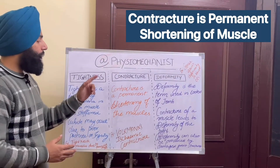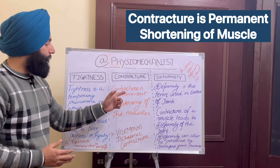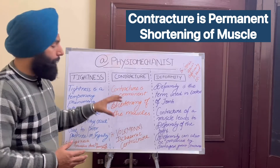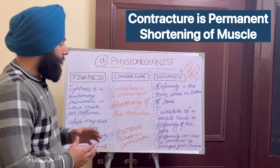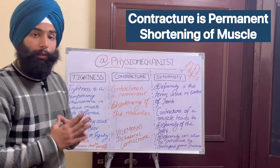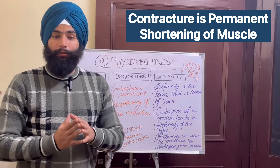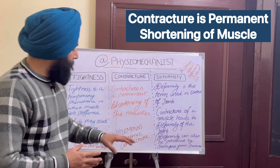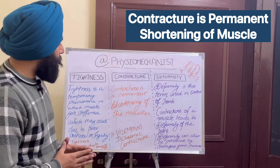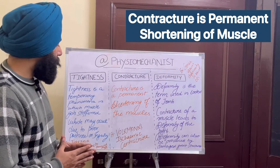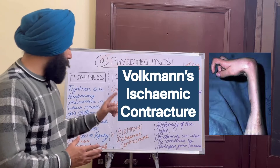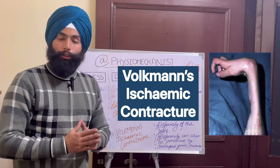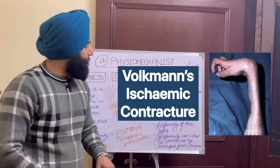What is a Contracture? Contracture is defined as a permanent shortening of muscles. This is permanent shortening of muscles and the treatment is surgical. The example of Contracture is Volkmann's Ischemic Contracture, due to occlusion of the brachial artery.